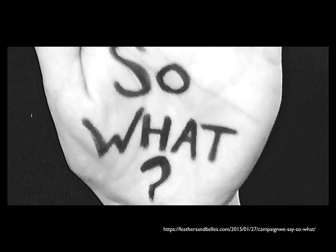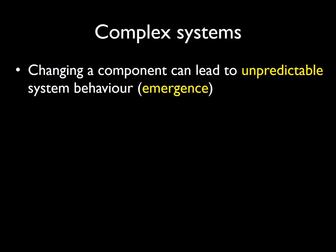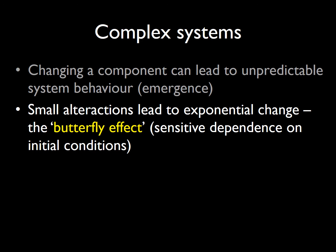This is all well and good, you may be saying to yourself, but so what? Well, the significance of physiological systems being complex systems lies in the effect of altering or manipulating components within those complex systems. This manipulation can lead to so-called emergence of unpredictable and possibly unwanted system behaviour. Even small changes to those components can lead to massive or exponential changes in the system's behaviour.